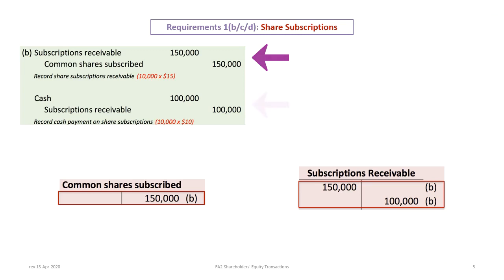At the same time, the company receives a $10 cash payment or deposit on the share subscriptions, so we debit cash and credit subscriptions receivable for $100,000. I've shown two T-accounts here: one for common shares subscribed and one for subscriptions receivable. The balances start at zero, and there is an immediate credit in the first transaction for $150,000, along with a debit to subscription receivable followed by an immediate credit for $100,000.